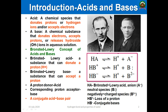Acids are chemical substances that donate a proton or hydrogen ion, and which accept electrons. A base is a chemical substance which donates electrons and accepts protons, or releases hydroxide (OH minus) ions. The most important concept of acids and bases is the Bronsted and Lowry concept of acids and bases.